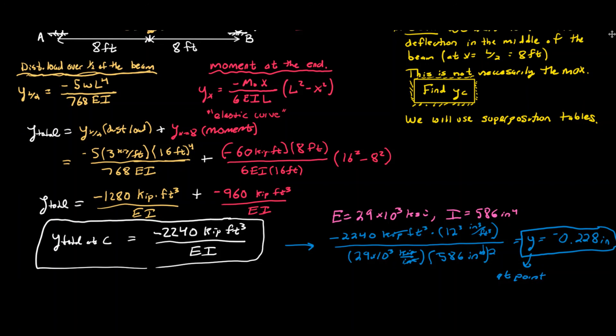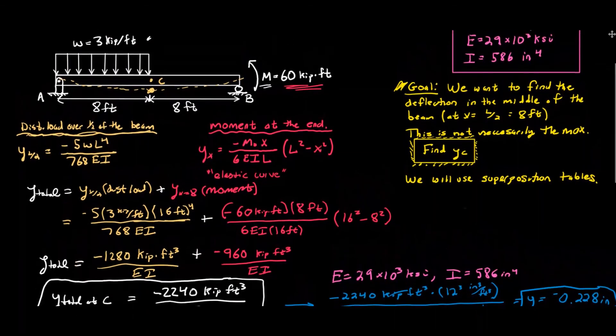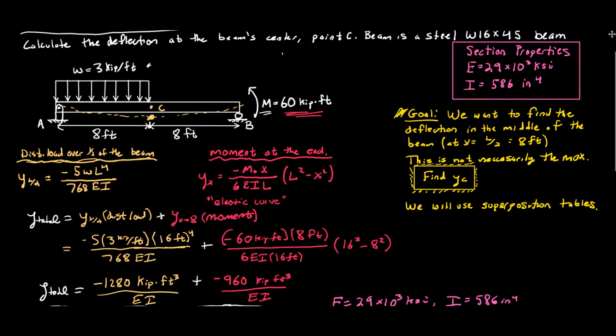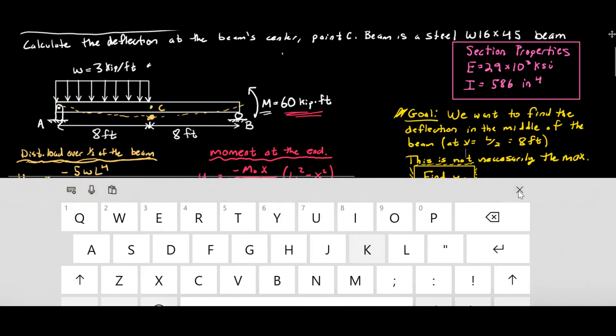So that was using the superposition tables — there are a whole bunch of different combinations we can use for different types of problems. This one wasn't too bad; we did have to use the elastic curve for the moment. Generally the superposition tables are easier to use when loading is relatively simple, and they're also really helpful for indeterminate problems. Thanks for watching and hope to see you next time.